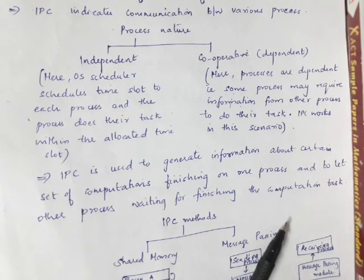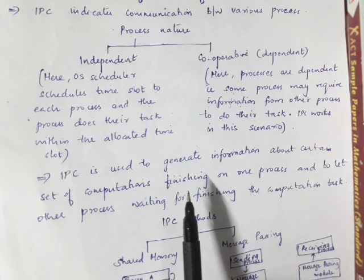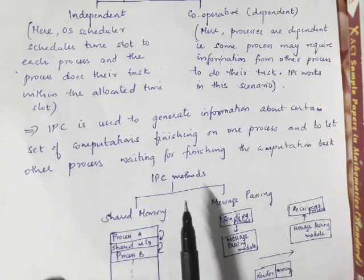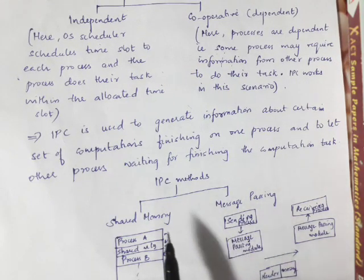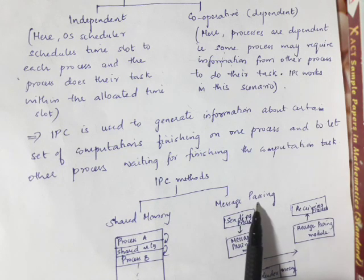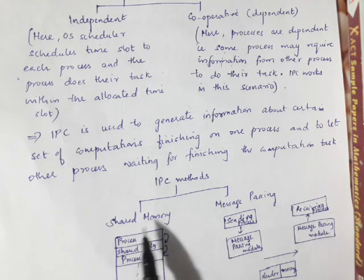Inter-process communication means getting information from one process and giving that information to another process. There are two methods of inter-process communication: the first is shared memory, and the second is message passing.